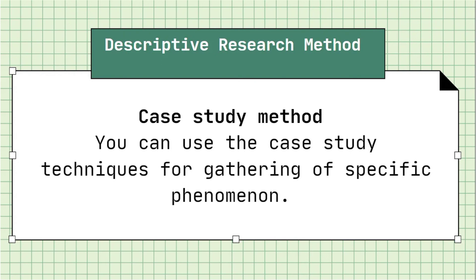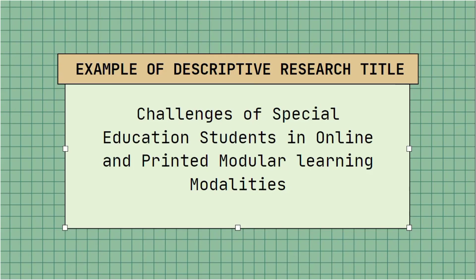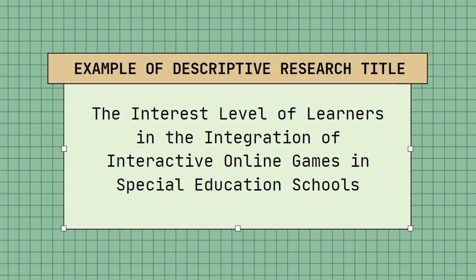I have here an example of descriptive research title. This can be your guide on creating your own descriptive research title. Since I am in special education, I end up with this title. The first one is challenges of the special education student in online and printed modular learning modalities. The second is the interest level of learners in the integration of the interactive online games in special education schools.